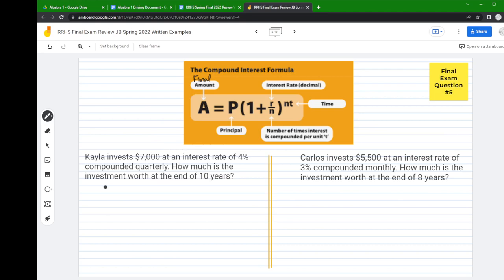The first thing I do is identify what each variable is, otherwise I get confused easily. The question asks how much is the investment worth at the end of ten years - that's my A value. Kayla invests seven grand, so the amount she started with is seven thousand. Let's put that for P.